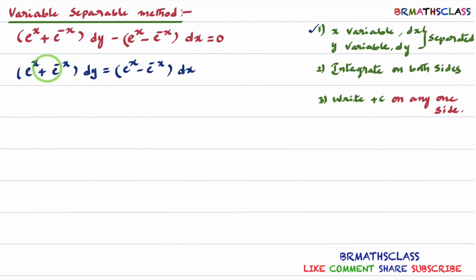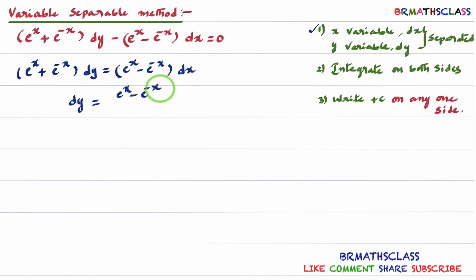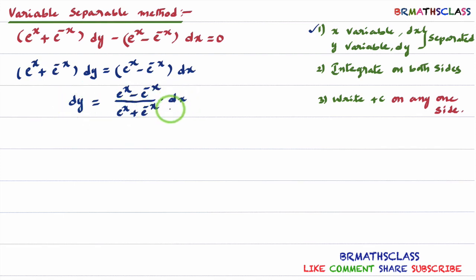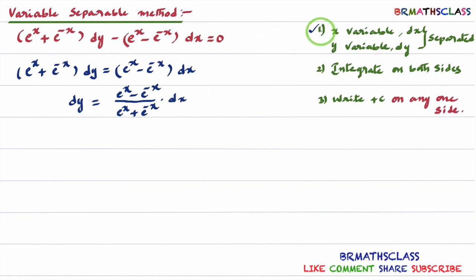So what you will get here is: e power x plus e power minus x, into dy, equal to e power x minus e power minus x into dx. My main intention is to write all x terms and dx at one side, all y terms and dy at one side. So you will get dy equal to e power x minus e power minus x divided by e power x plus e power minus x into dx. All x terms dx are at one side and all y terms dy are at one side — step 1 is completed.